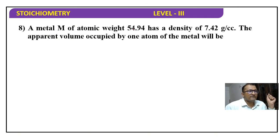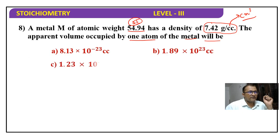Next question: a metal M of atomic weight 54.94, we will take it 55, has a density of 7.42 grams per cc. This cc means cubic centimeter. The apparent volume occupied by one atom of a metal will be - four options are given. cc means ml. Now see, 7.42 grams per centimeter cube means one centimeter cube has mass 7.42 grams.